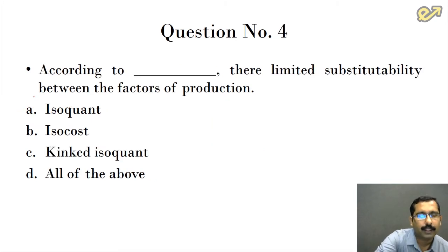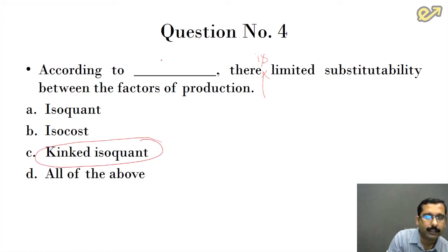According to dash, there is limited substitutability between the factors of production. Let us add 'is' here. When is that possible? When it is a kinked iso-quant curve. Remember this, when it is kinked iso-quant curve. So the answer is option C.